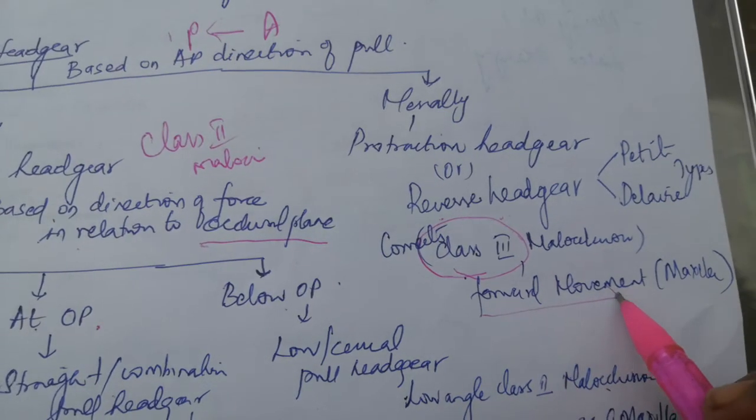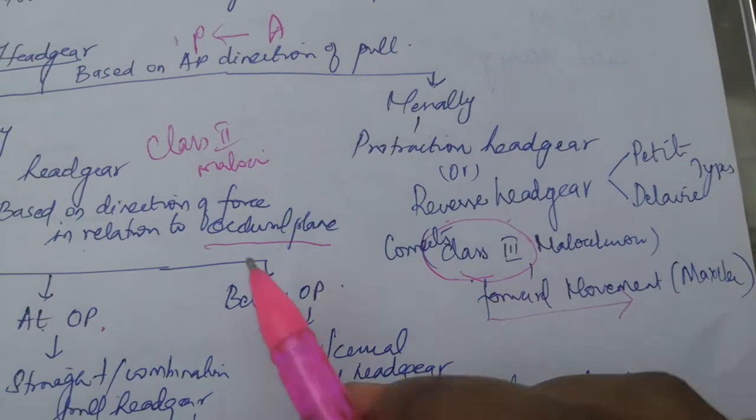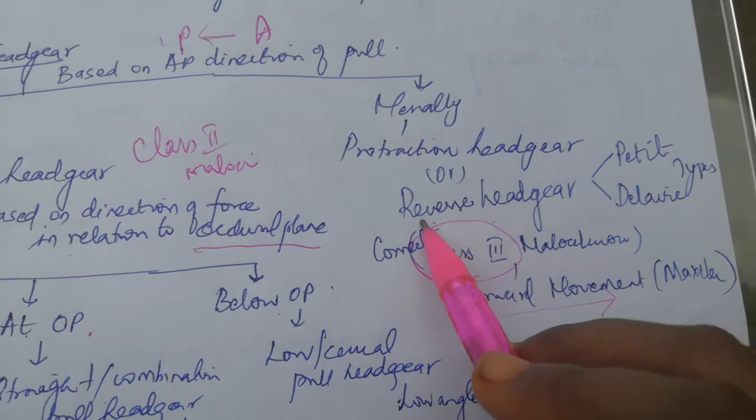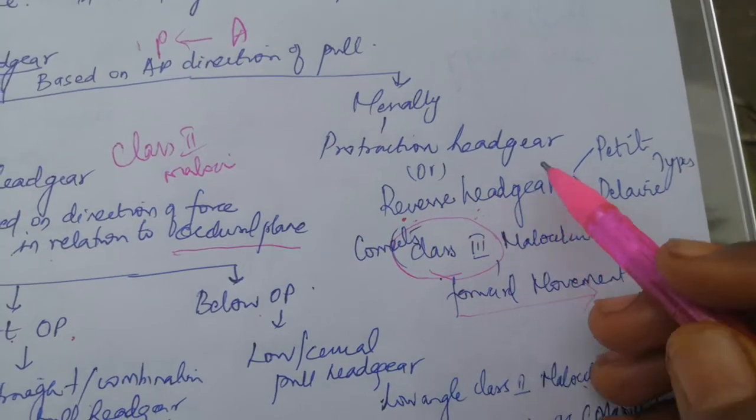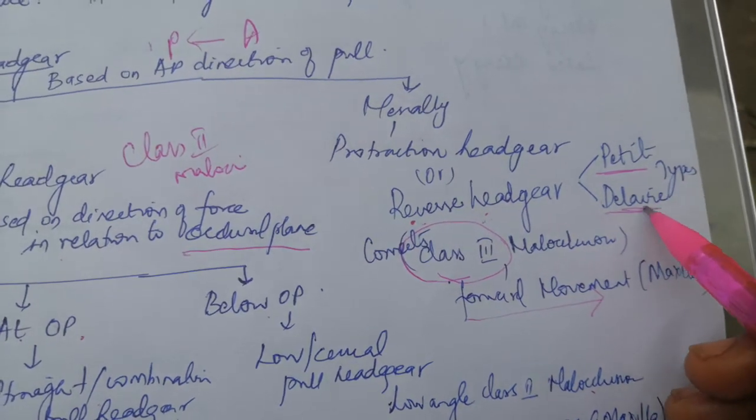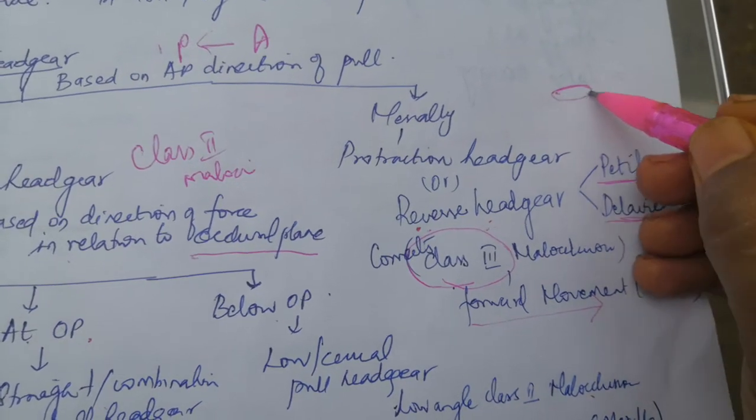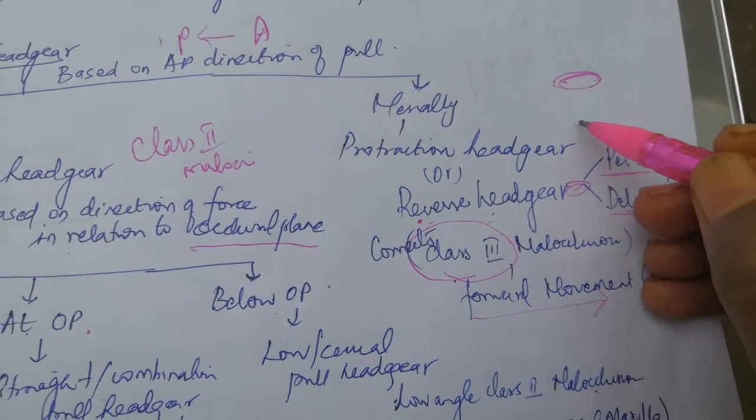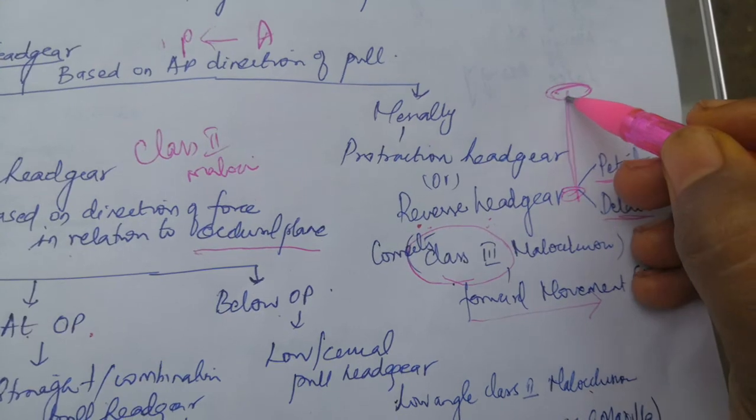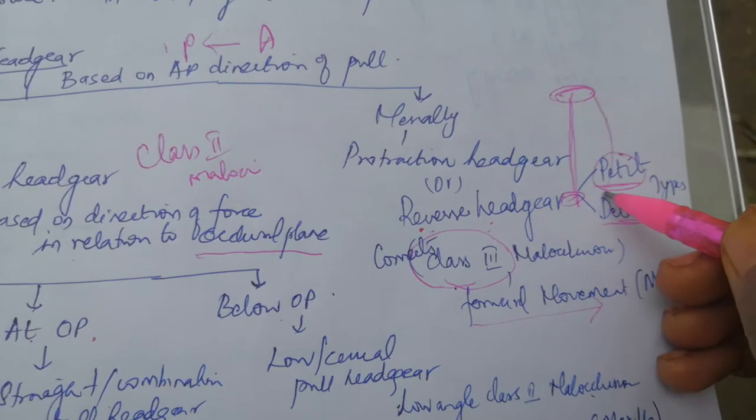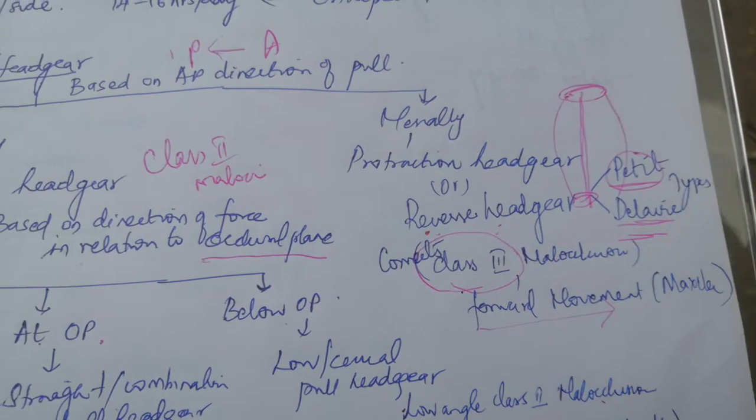It will exert forward movement of the maxilla. It is just a reverse of a headgear, so it is called reverse headgear. Either it will be a Petit type or a Delaire type. The head forehead component and chin component will be attached with a single rod called Petit. If it is on either side, it's called Delaire type.